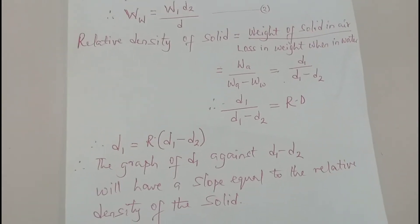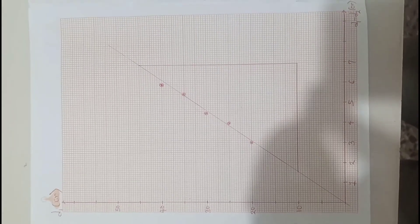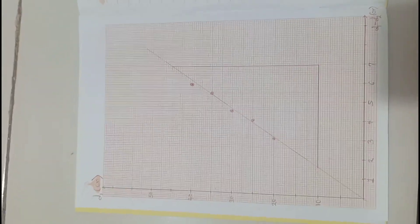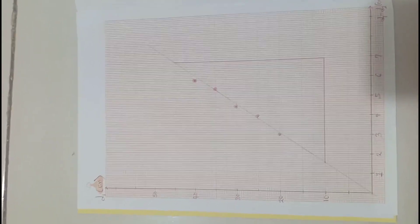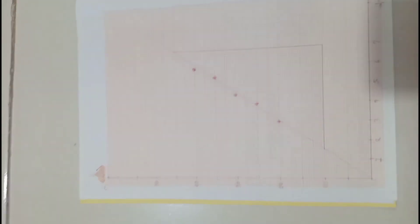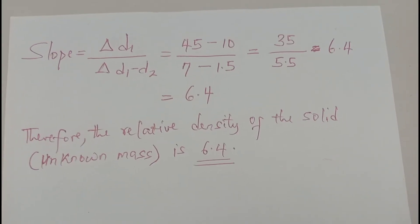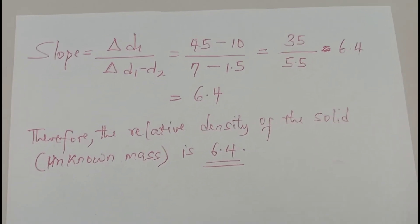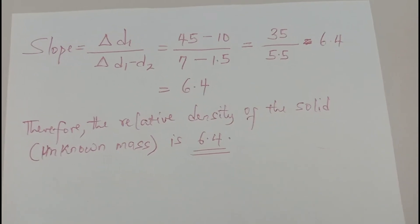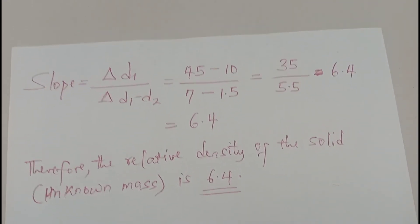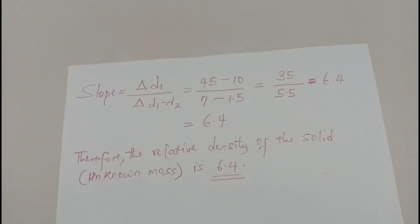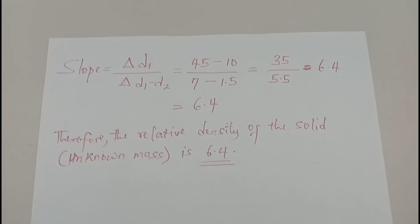Having done that, I plotted the graph. The graph of d1 against (d1 minus d2) is a straight line through the origin, as expected. Finding the slope of this graph gives 6.4. The implication of this value is that the relative density of the solid — the unknown mass — is 6.4. Relative density has no unit, so this value is unitless.